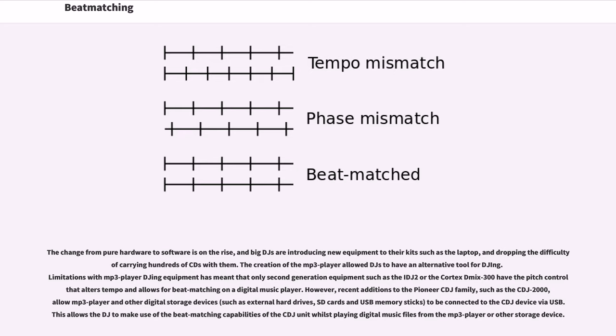Limitations with MP3 player DJing equipment has meant that only second-generation equipment such as the iDJ2 or the Cortex DMIX-300 have the pitch control that alters tempo and allows for beatmatching on a digital music player.